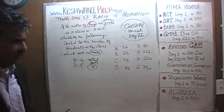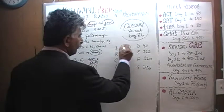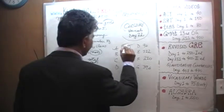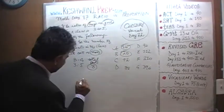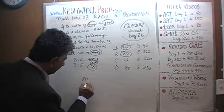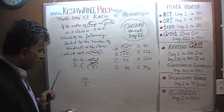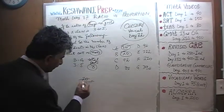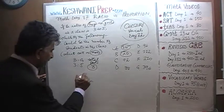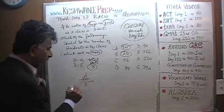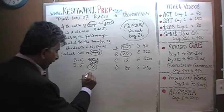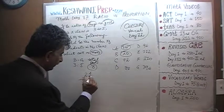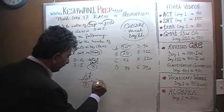Let's look at the answer choices. 16 is very straightforward — 16 is divisible by 8, so that's correct. 20 is not divisible by 8. 20 has two 8s, which are 16, leaving a remainder of 4. That remainder of 4 divided by 8 gives us 2 and a half.